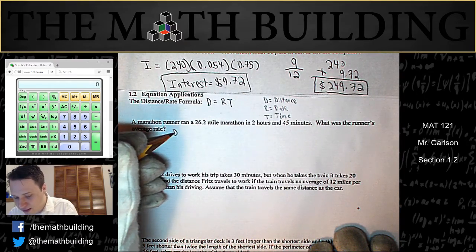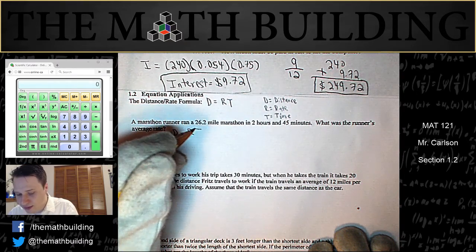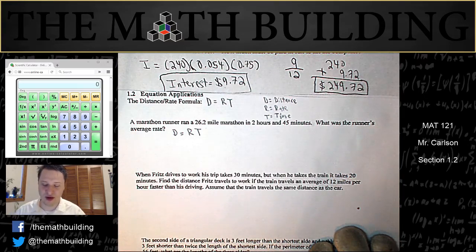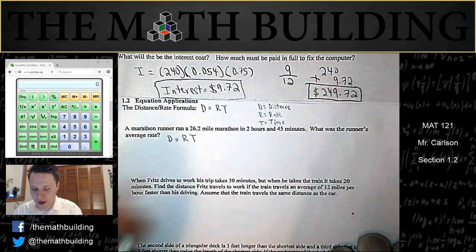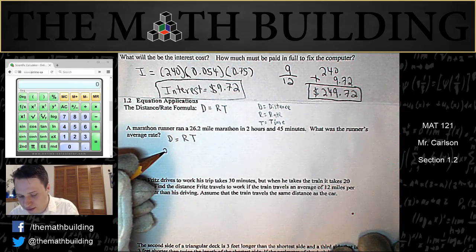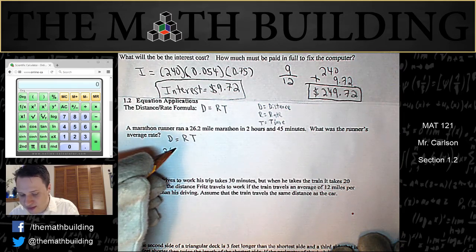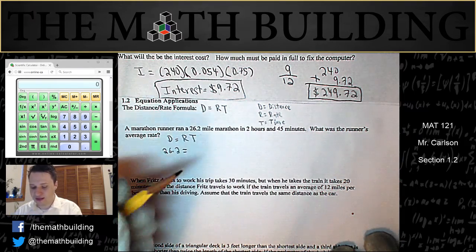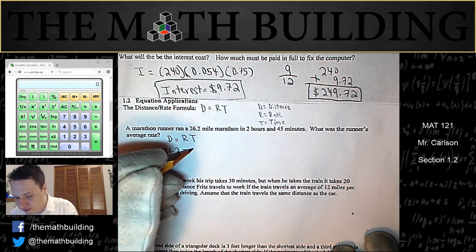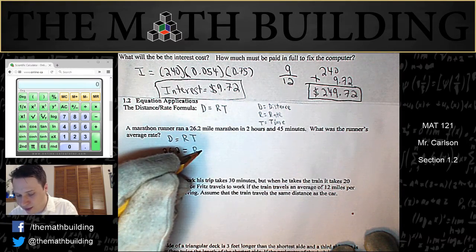So let's write the formula down. Distance equals rate times time. This should be your first step in doing this. Write the formula down. We know that the distance is 26.2, so we will replace D with 26.2. Times, they're asking for the rate, so we don't know what that is, so we'll call it R.